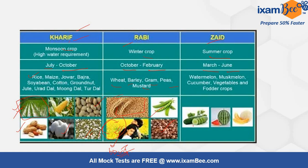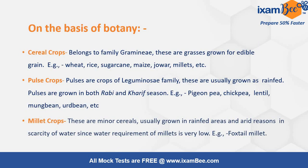The Zayad crops mainly include cucumber, watermelon, and muskmelon. All certain vegetables, fodder crops, and also strawberries are included in Zayad crop.